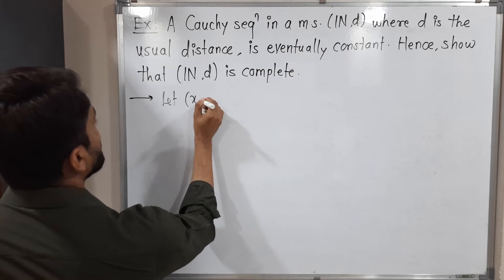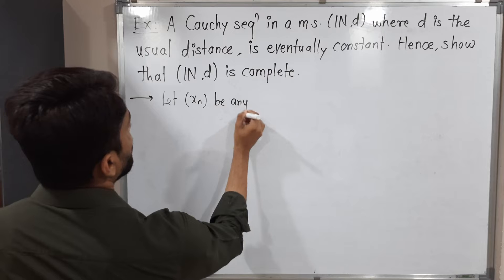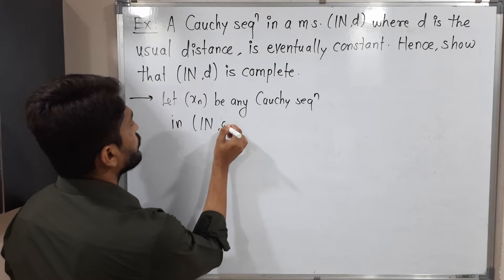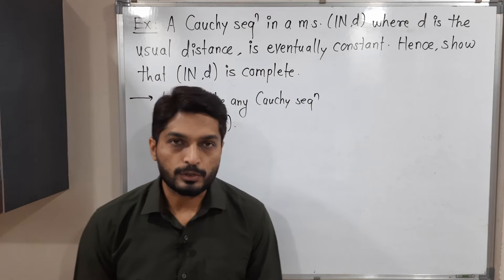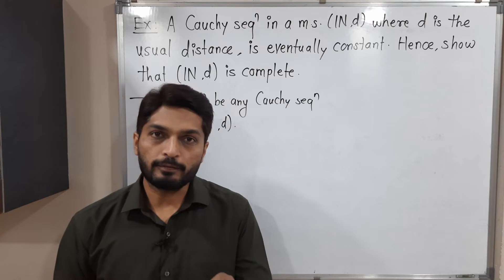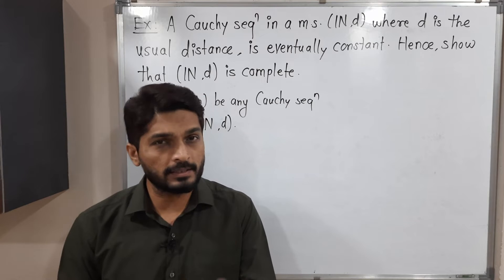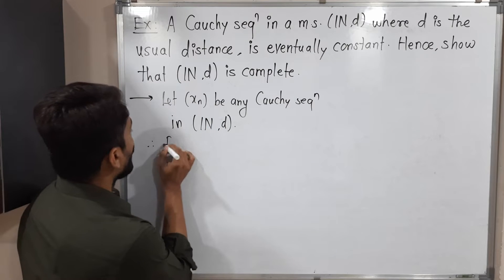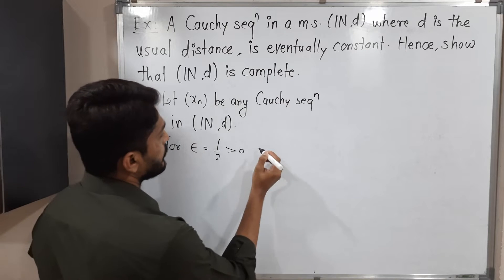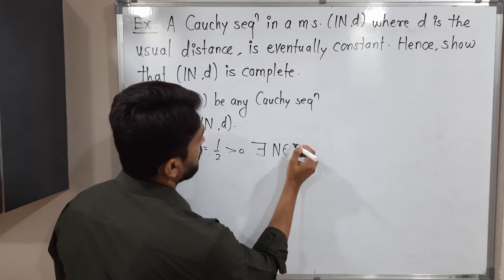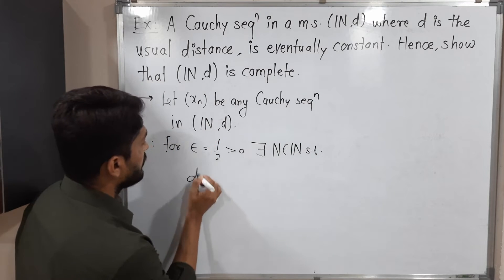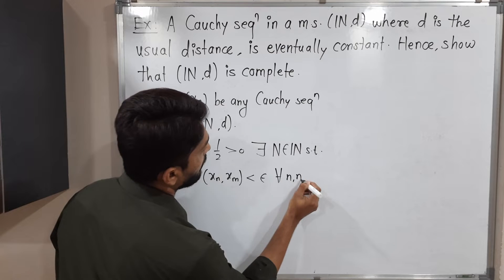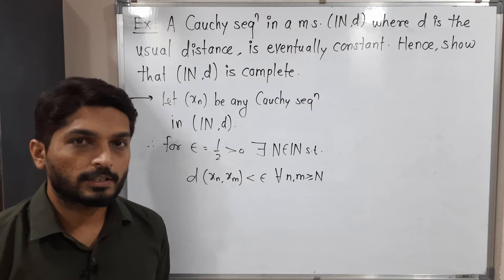Let Xn be any Cauchy sequence in N, D. We have to prove it is eventually constant. First of all I will use the definition of Cauchy sequence. Definition of Cauchy sequence says: for given epsilon greater than 0. But here I will select a particular epsilon which is 1 by 2. So therefore, for epsilon equal to half — obviously it is positive — there exists capital N belonging to the set of natural numbers such that D of Xn, Xm less than epsilon for all n, m greater than or equal to capital N.